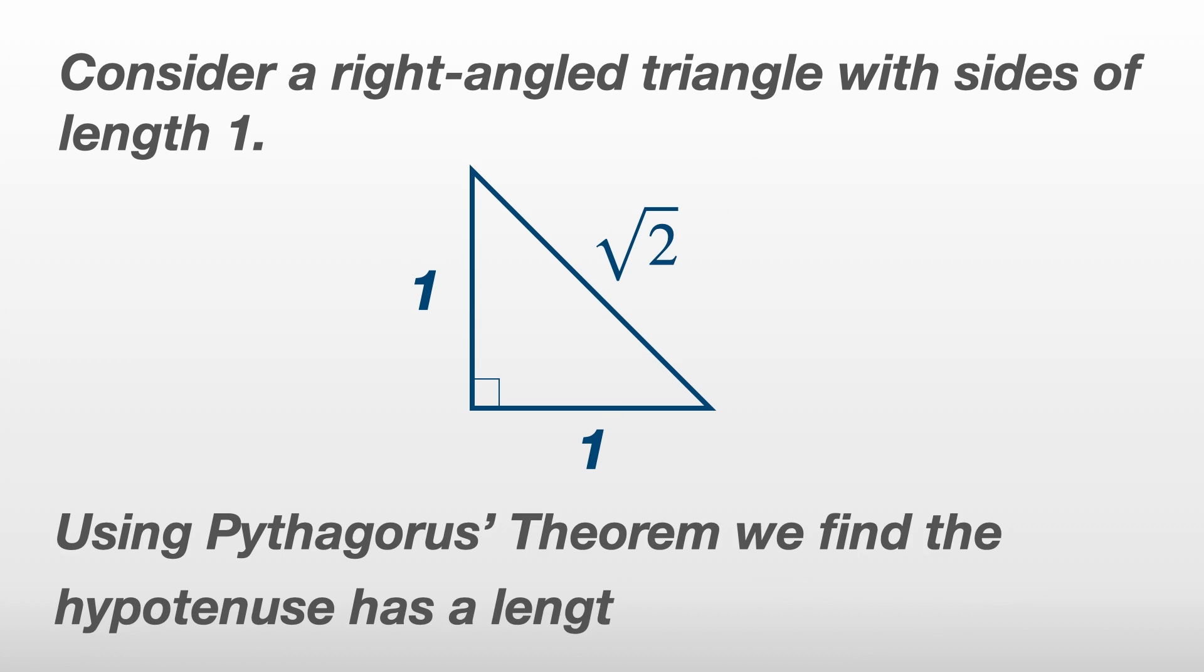So Pythagoras' theorem says that for a right-angled triangle with sides of lengths a, b and c, where c is the hypotenuse, the line opposite the right angle, then the lengths of the sides have the relationship a squared plus b squared equals c squared. So let's consider a right-angled triangle with sides a and b of length one. We find that the hypotenuse is of length square root of two.